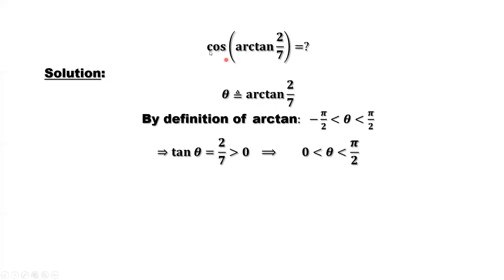In order to find cosine of arc tangent of 2 over 7, we don't have to find the theta angle. We can construct a right triangle in this interval in the first quadrant. We can consider x as 7, y as 2.